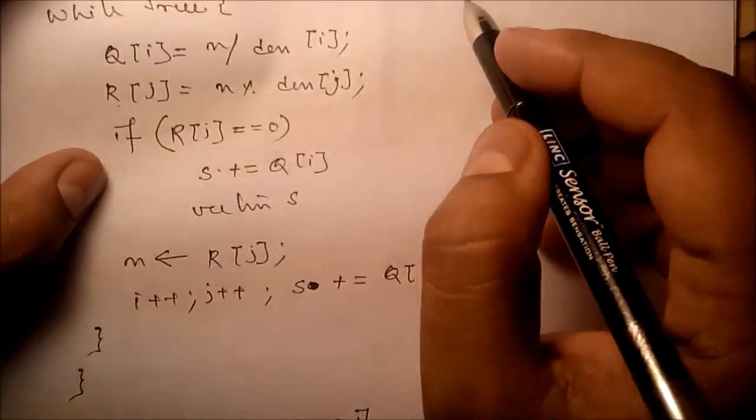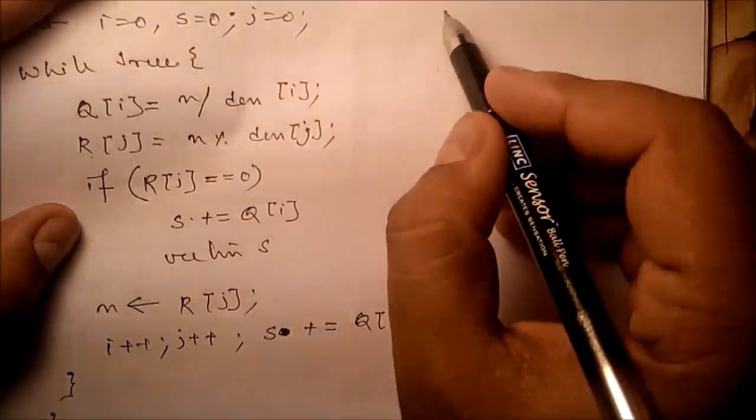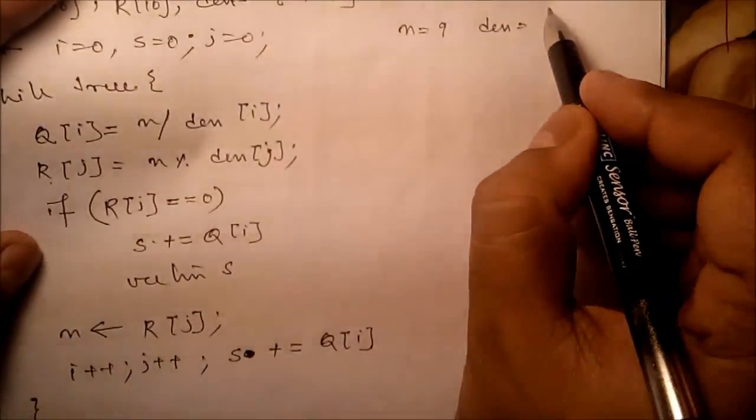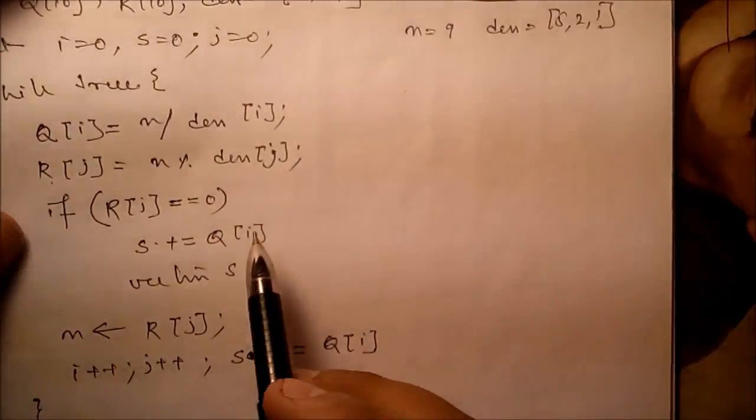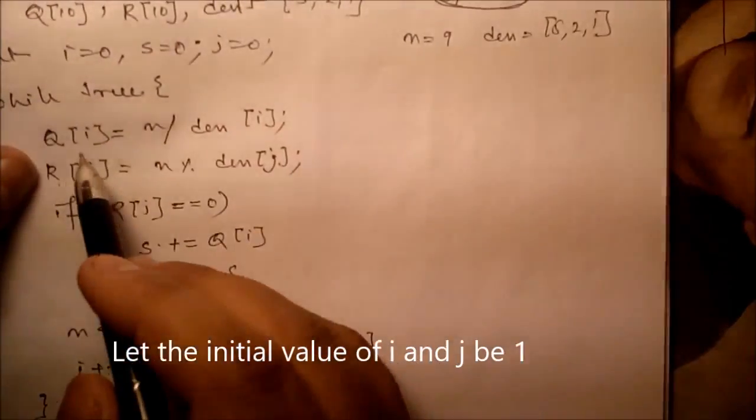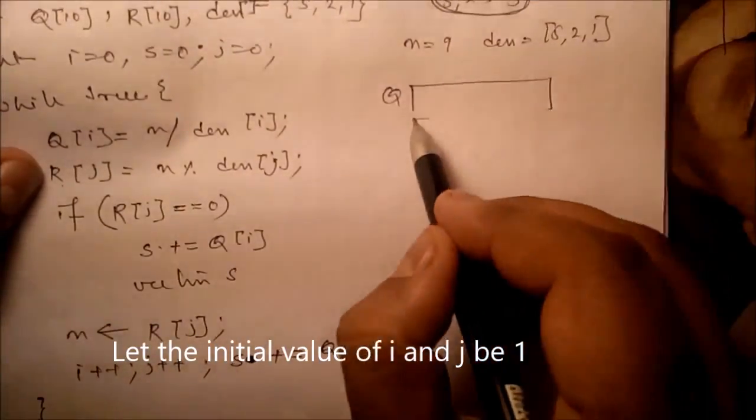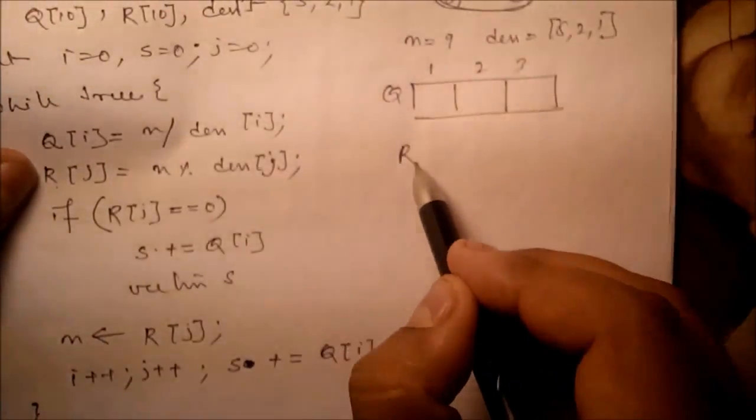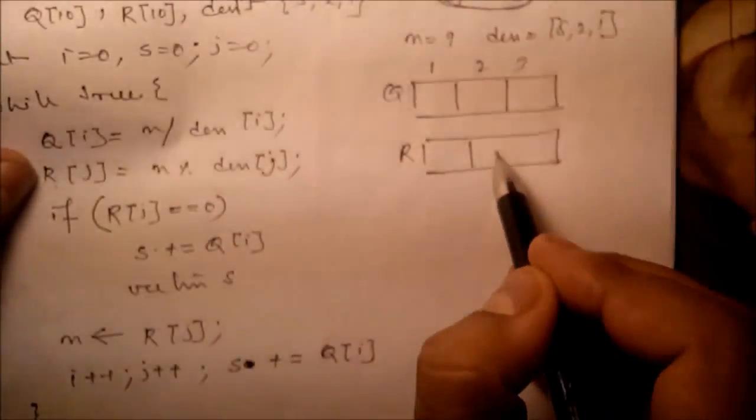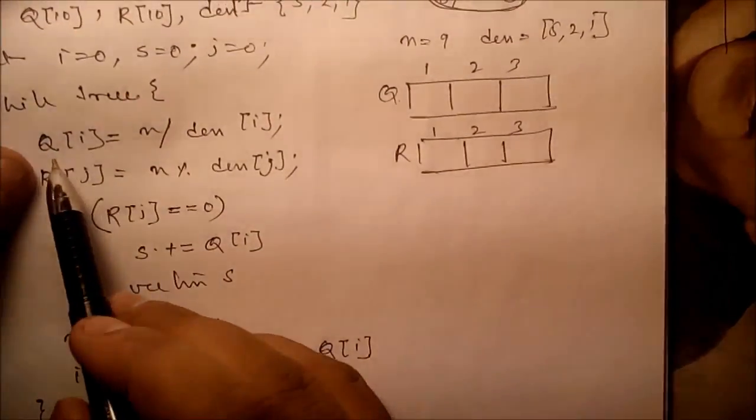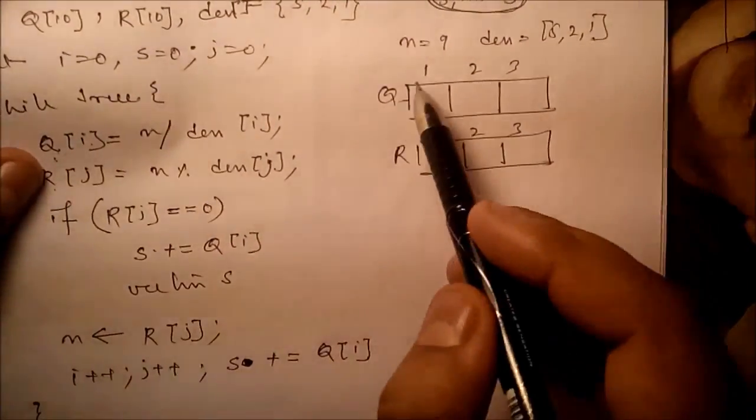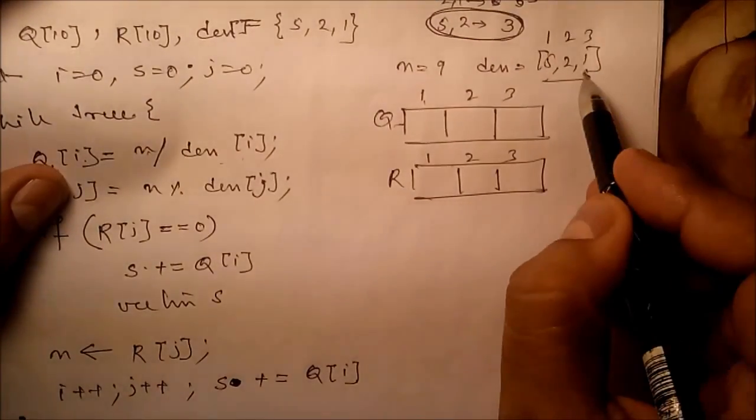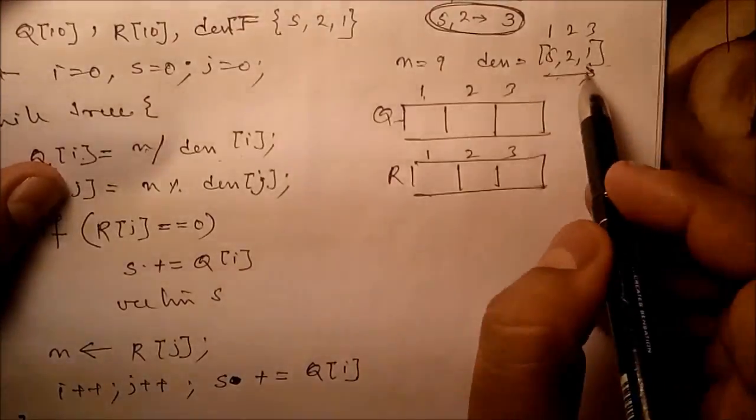Now we can check this one. Suppose we have to return 9 rupees and we have denominations 5 rupees, 2 rupees, 1 rupee. So while true, in q we have indices 1, 2, 3, and in r also 1, 2, 3. Q[i] equals n divided by denomination[i]. So it is in descending order.